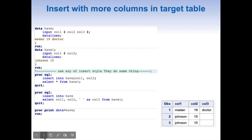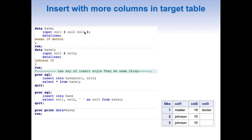Now let's look at another scenario. We have two datasets: 'have', with three variables, and 'have1', with two variables. When we try to insert from the source table into the target table using SELECT *, we get an error saying the target table has more columns than the source table. Since col1 and col1 match, and col2 and col2 match, but col3 has no counterpart, we cannot use the simple syntax and need to modify our code.